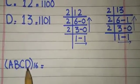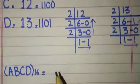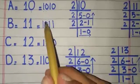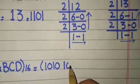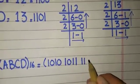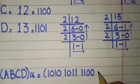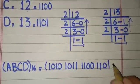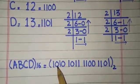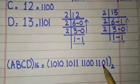So students, A, B, C, D in base 16: A is equal to 1010, B is equal to 1011, C is equal to 12 and 12 is equal to 1100, and D is equal to 13 and 13 in binary number system is equal to 1101. Our answer is 1010, 1011, 1100, 1101, base 2.